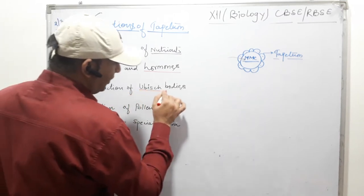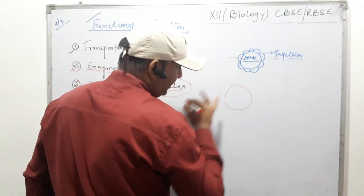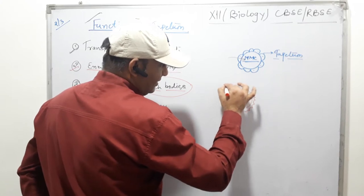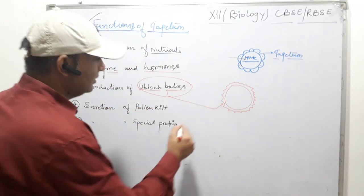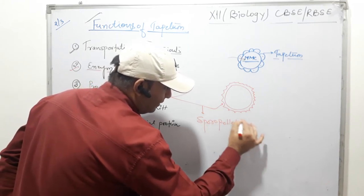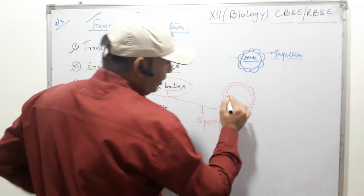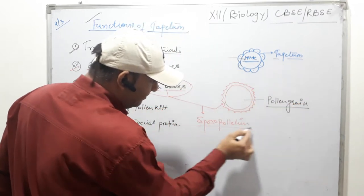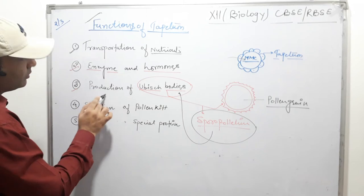The third function is production of Ubisch bodies. Ubisch bodies are important structures generally present outside the pollen grain. The inner membrane of the pollen grain is called intine, and the external membrane is called exine. The Ubisch bodies produce a chemical called sporopollenin. This sporopollenin covers the entire pollen grain. Sporopollenin is produced by the Ubisch bodies, which in turn are produced by the tapetum.